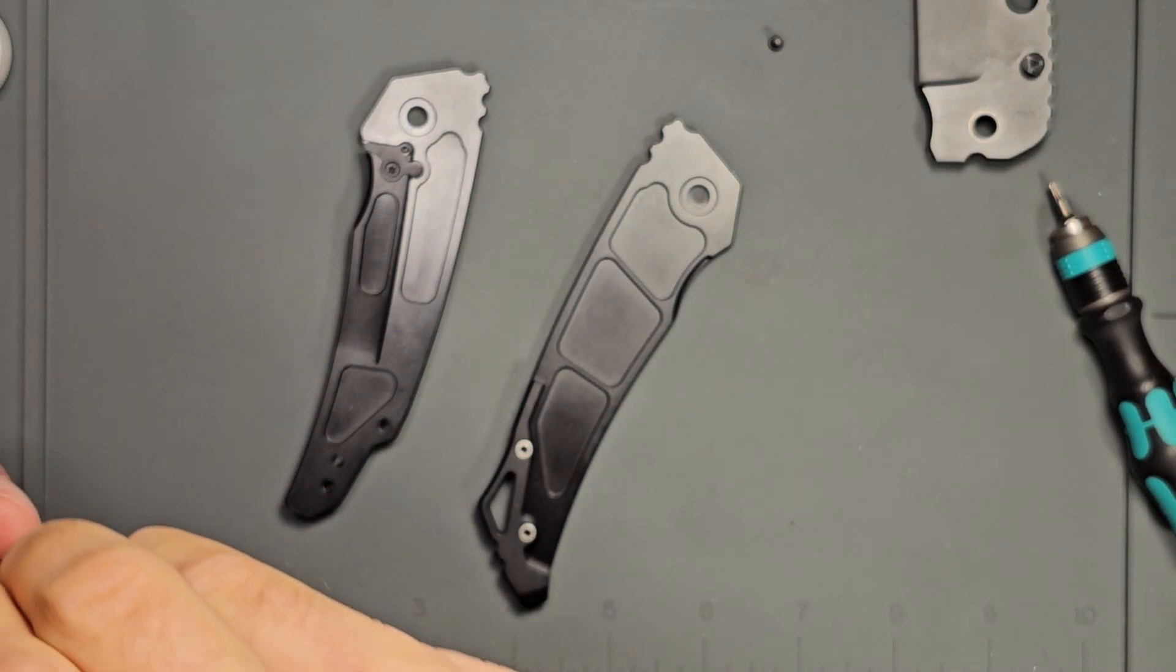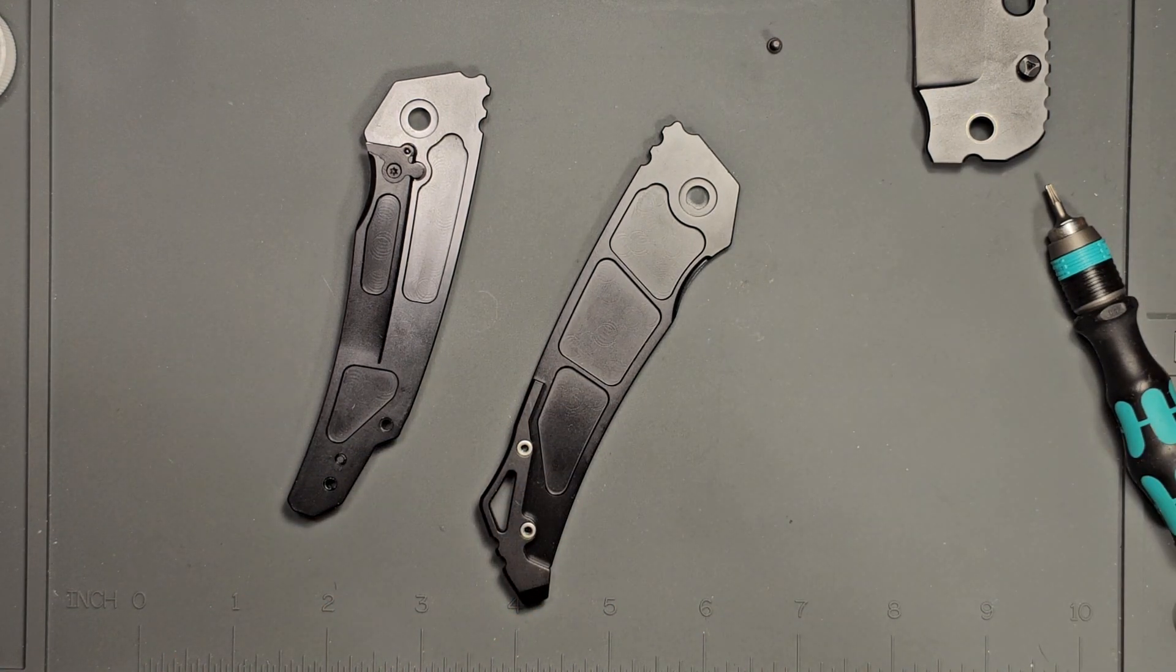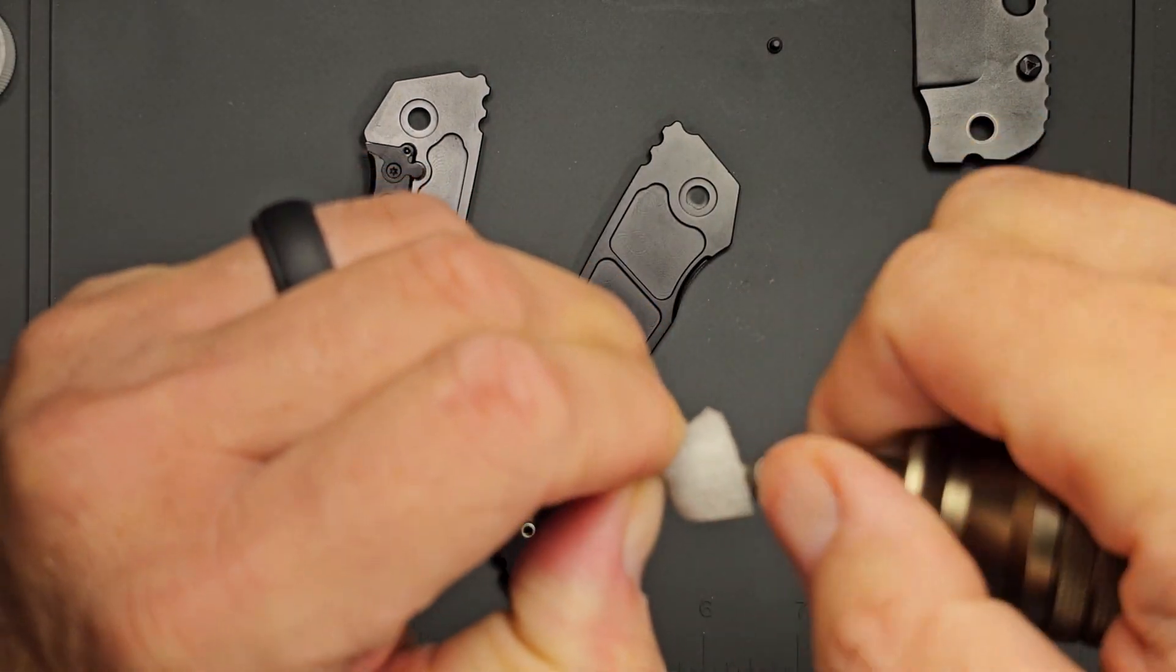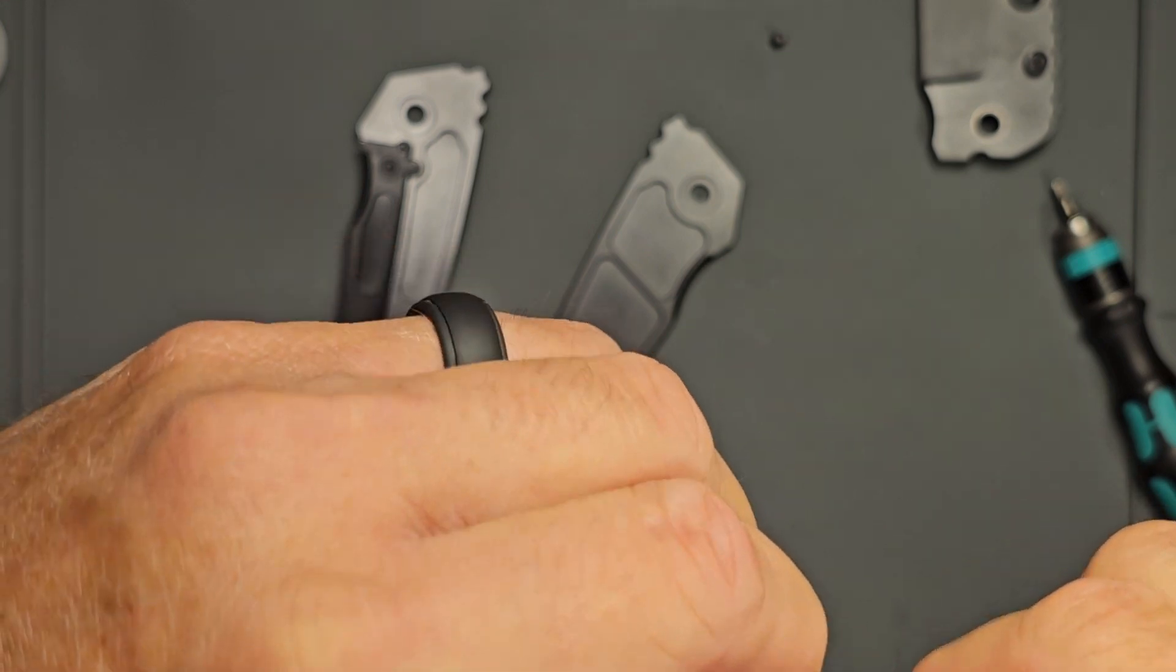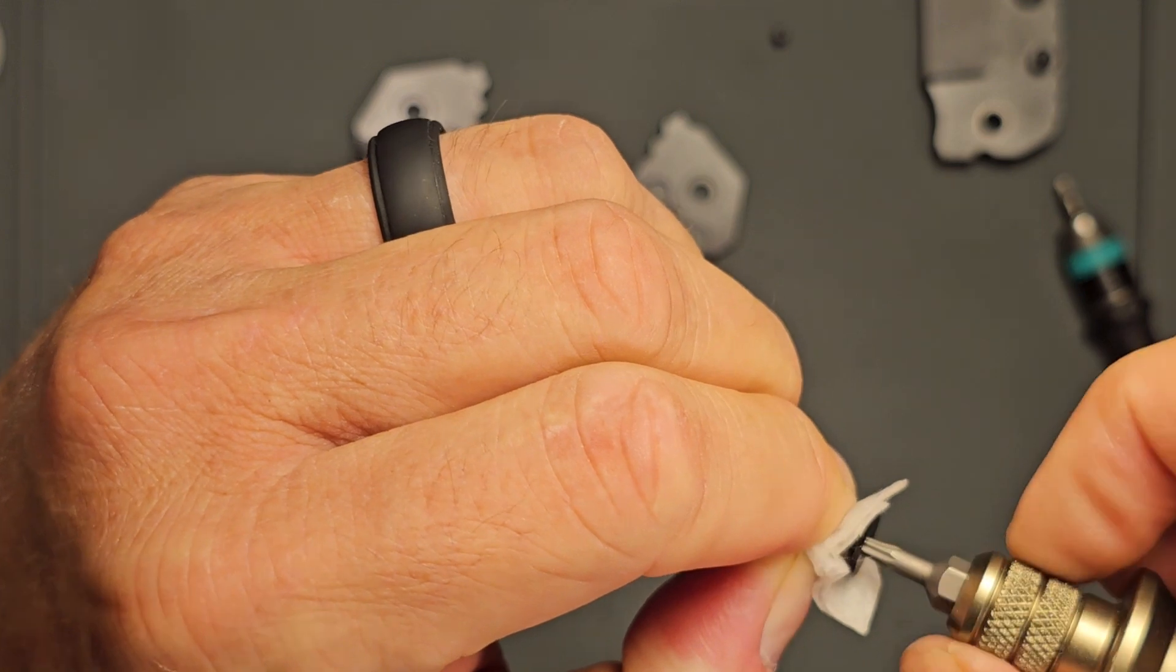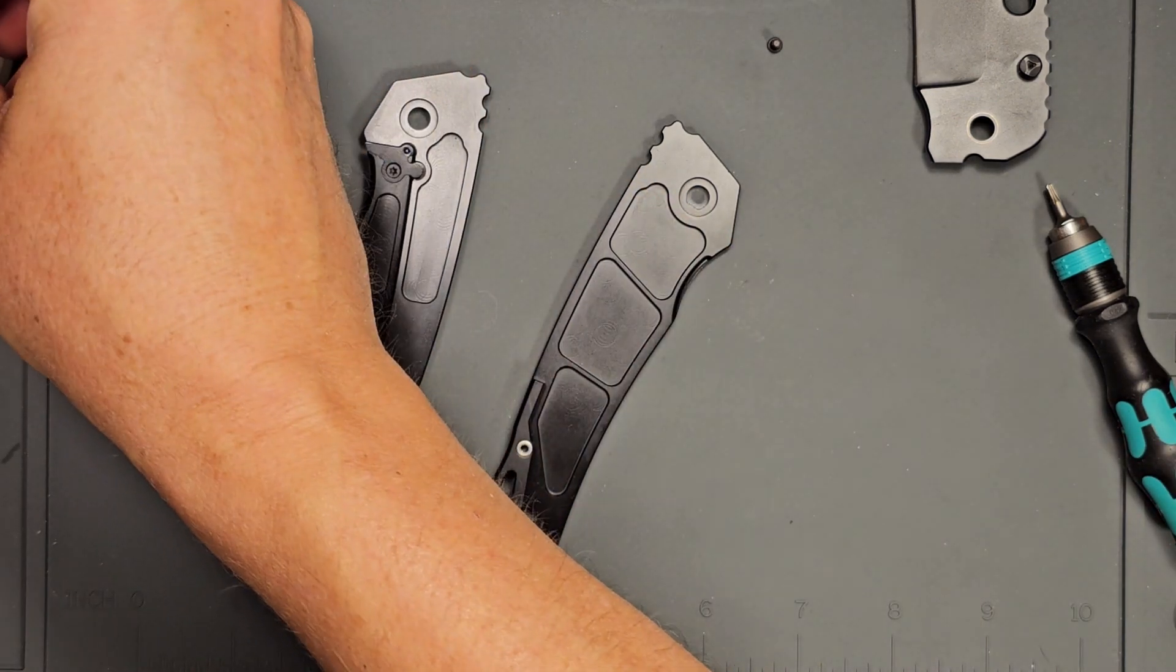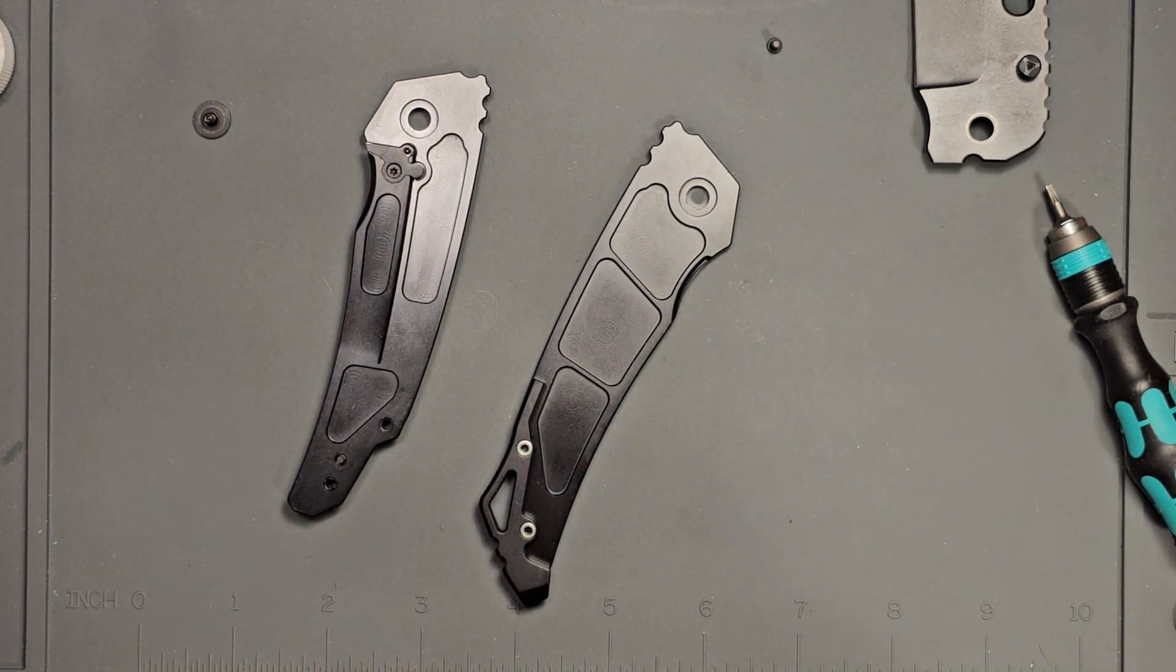All right, and then I especially want to get this pivot screw because it had a ton of Loctite in those threads. Let's see if we can make it look a little bit better. It actually made it look a lot better. Now we'll put a little bit of Loctite back on there, but it shouldn't be to the extent that it was on there when we took it apart.